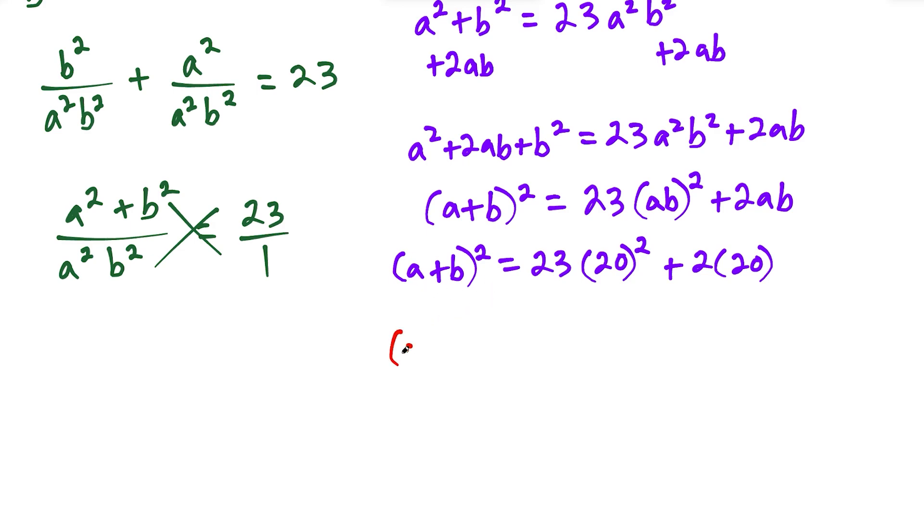So now we could just simplify. We have a plus b in parentheses squared equals, and 20 times 20 is 400. So if we do 23 times 400, we could just do 23 times 4. And then for 23 times 400, just add two zeros at the end. And 23 times 4, we have 12, carry the one, four times two is eight plus one is nine.